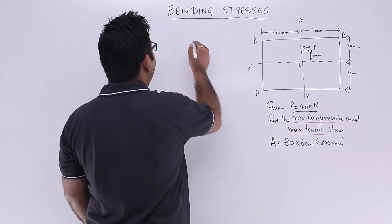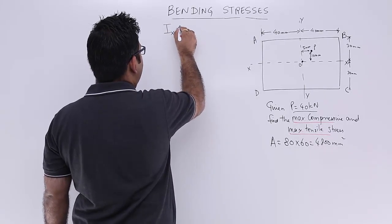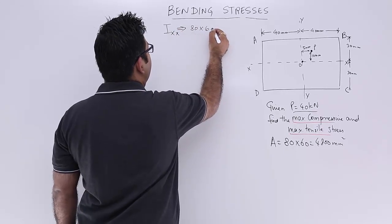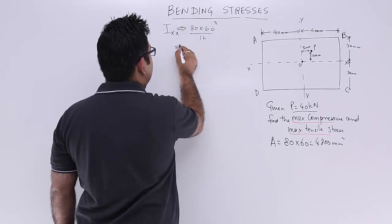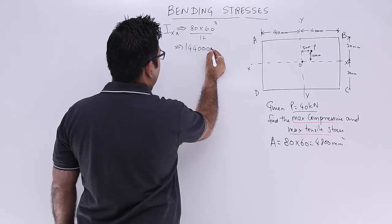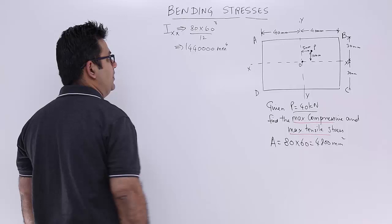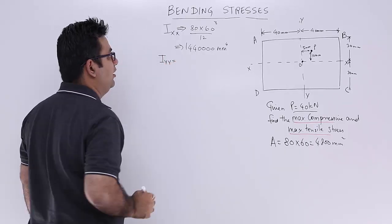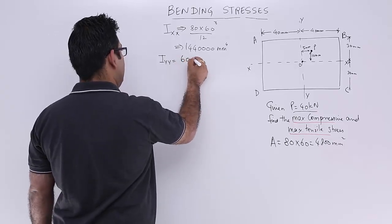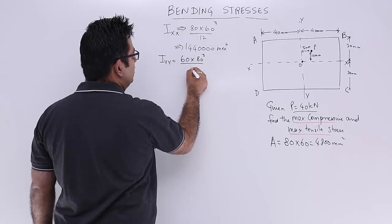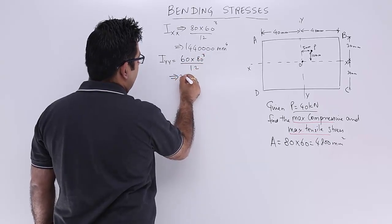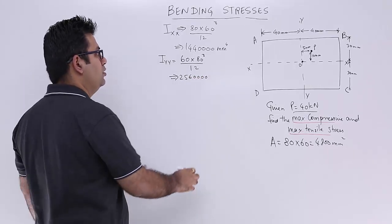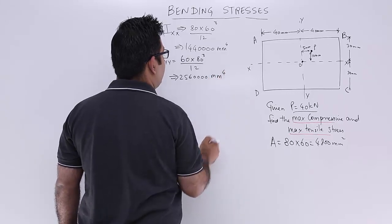For bending stress I need Ixx and I need Iyy. So Ixx would be 80 into 60 cubed by 12, which is 144 times 10 to the power 4 mm to the power 4. Similarly, I can find out Iyy: it will be 60 into 80 cubed by 12, which is 256 into 10 to the power 4 mm4.